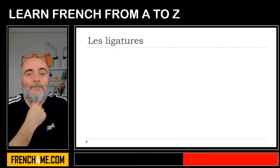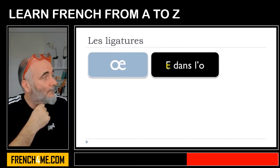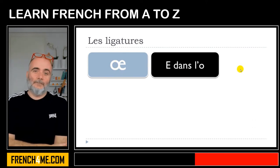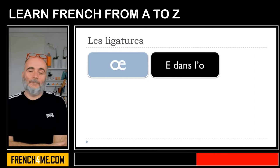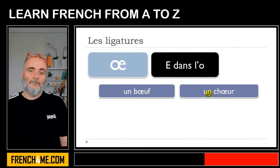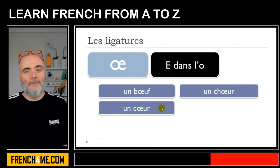The second ligature is E dans l'eau — the same concept: E inside O. It's only one letter, with O and E connected, glued to each other. This one is actually used a bit more often. Let's see a few words: un bœuf, un cœur — it's quite interesting because even if you write them differently, you pronounce them the same way.